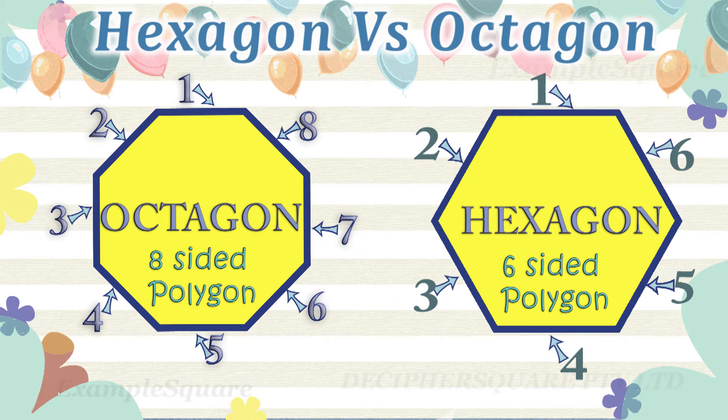A polygon is a two-dimensional closed shape having three or more straight sides.